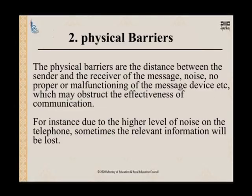The second barrier is the physical barrier. The physical barrier refers to the distance between the sender and the receiver. The greater the distance, the higher the chances of obstruction in the message. Physical barriers also include noise or malfunction of a messaging device, which may obstruct the effectiveness of communication. For example, if you are sending a message by telephone and the network is unclear, or there is too much background noise, the message cannot be transmitted clearly.